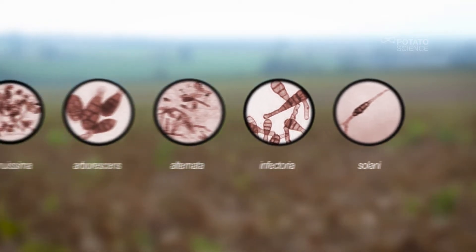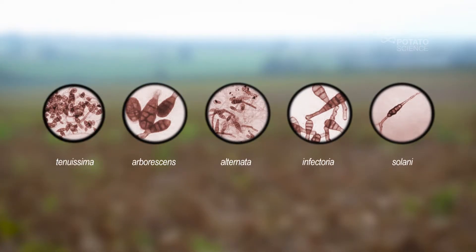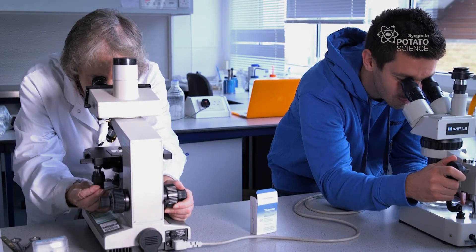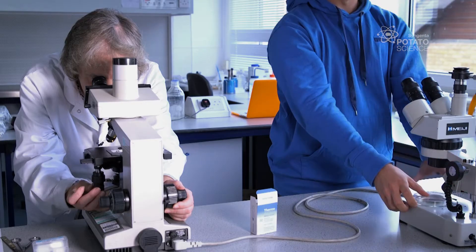The interesting thing is that Alternaria solani seems to come in relatively late in the season — from the end of July onwards it starts to increase and really becomes more prevalent in September.